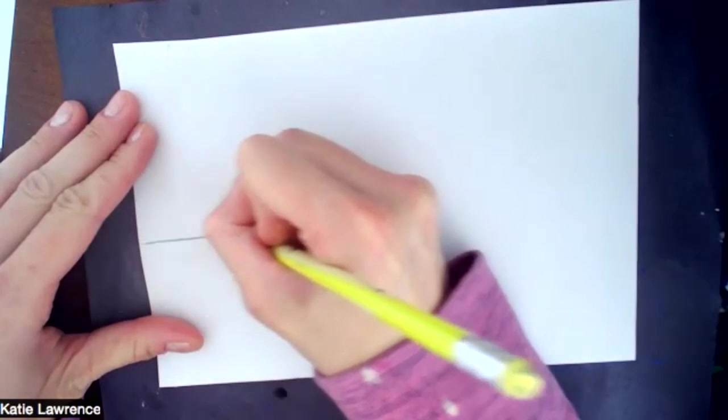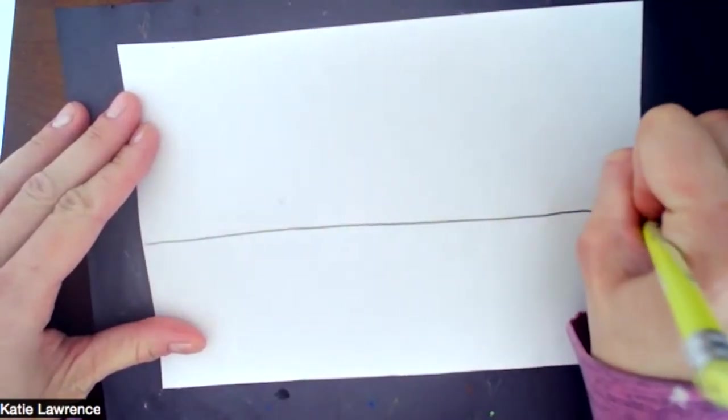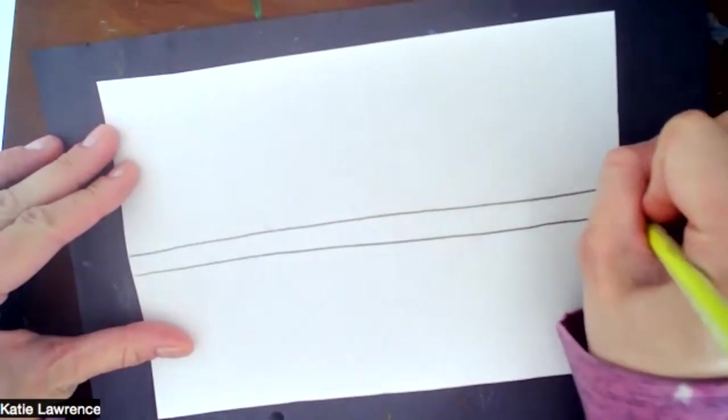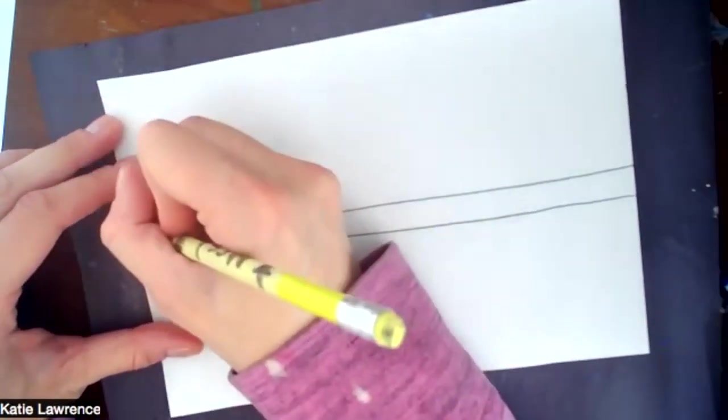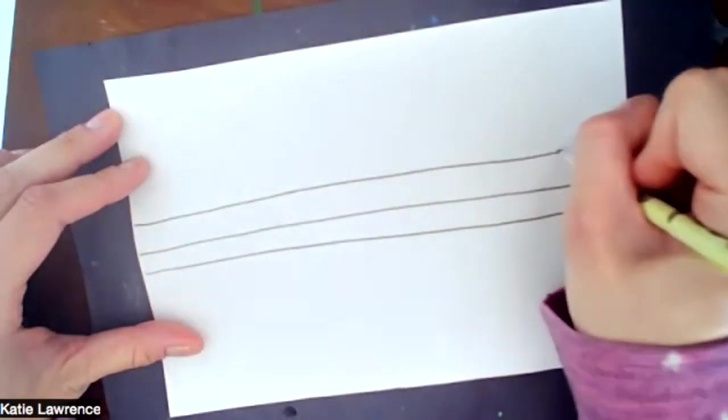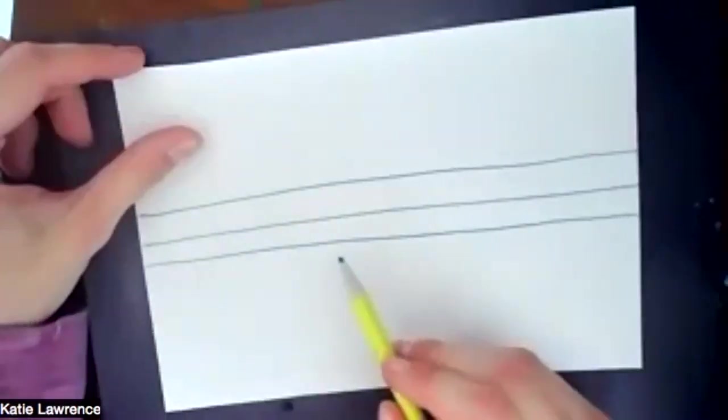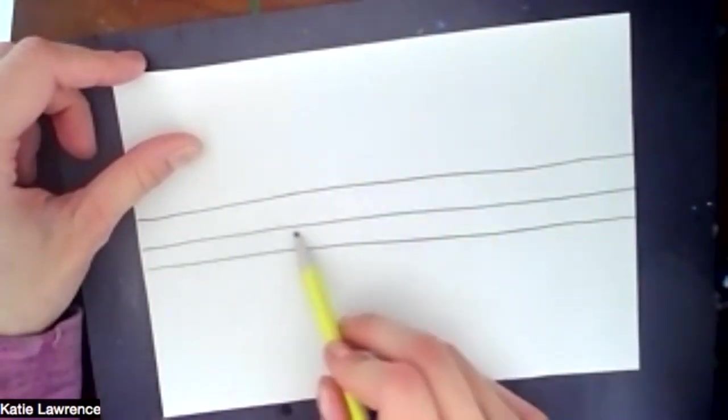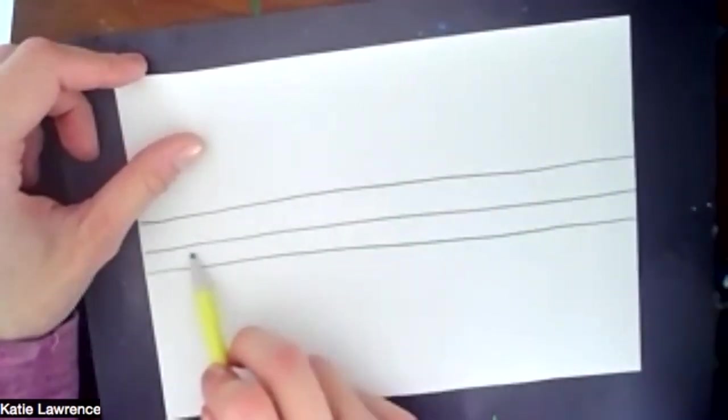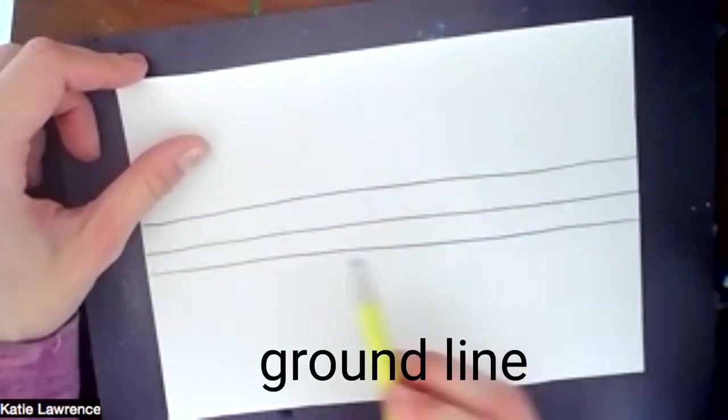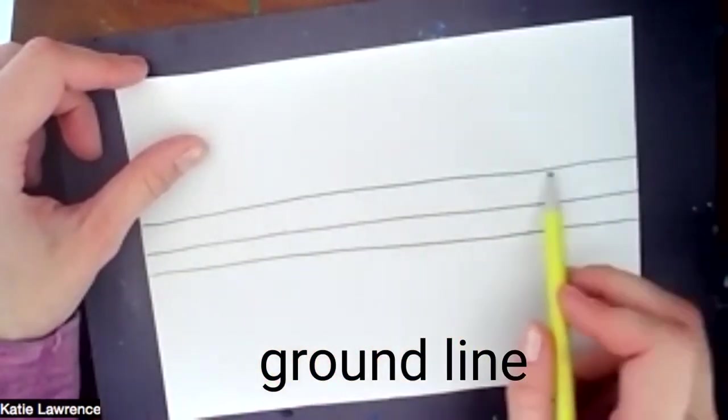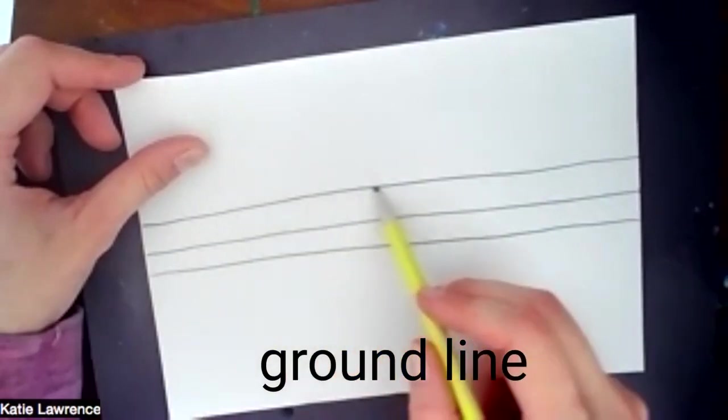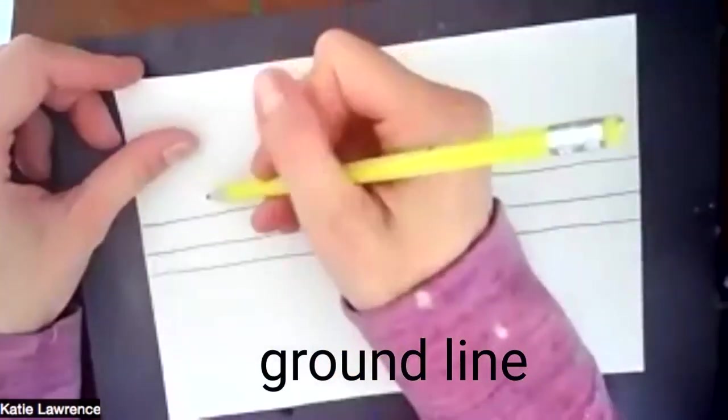We're going to start by drawing three lines across the middle of your paper. This is the line for where your pool is. Your pool is all here. This is the line for the tile or cement inside the pool. And this is called your ground line. Everything you draw is going to be on top of your ground line.